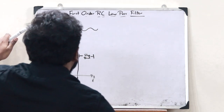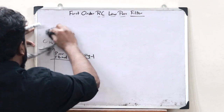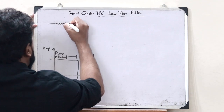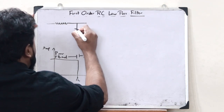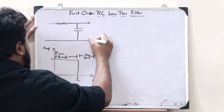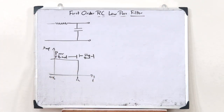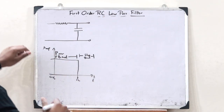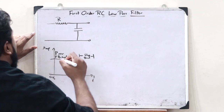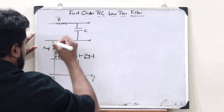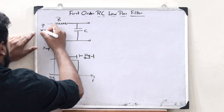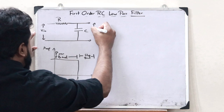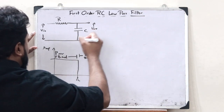Let us construct the circuit diagram of a first-order RC low-pass filter. This circuit has a resistor R and a capacitor C. We give an input voltage V_in, and the output voltage V_out is obtained across the capacitor.